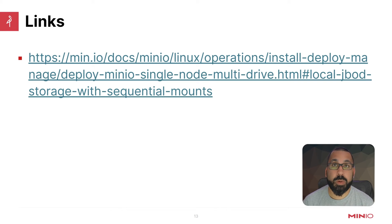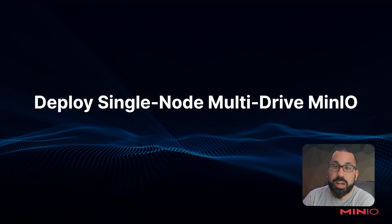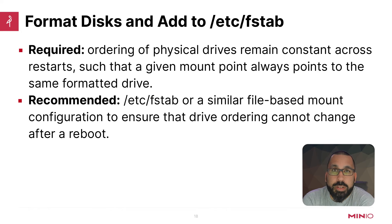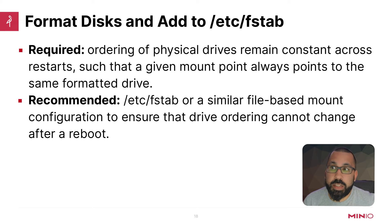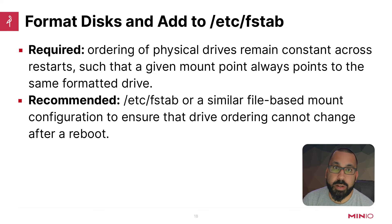Here are some documentation links — we'll put these in the description below so you can follow along and understand MinIO's methodology on using JBOD configuration with sequential mounts. MinIO requires using the expansion notation: curly braces with a drive number range, so X could be one and Y could be four, giving you four total drives. You cannot define them individually — you have to use this exact notation for this to work.